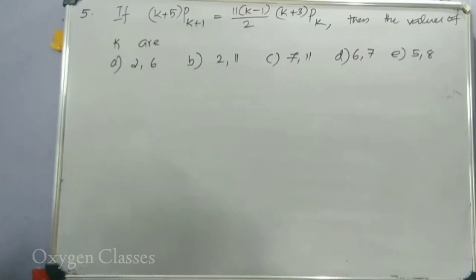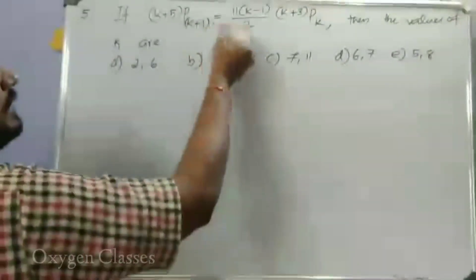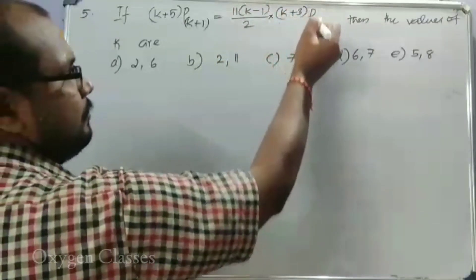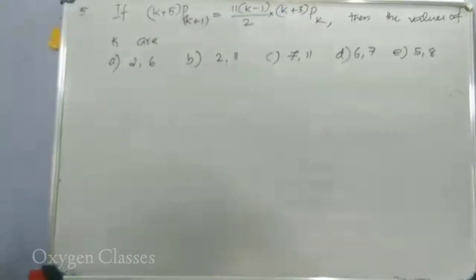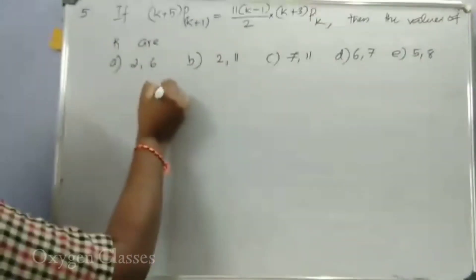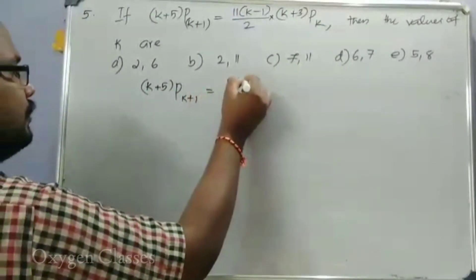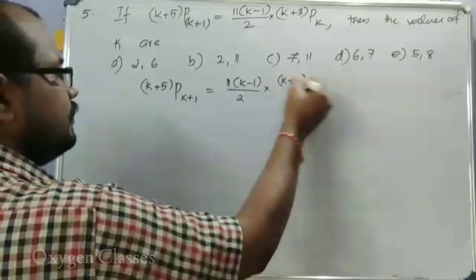If k+5·P(k+1) is equal to 11 into (k-1) by 2 into (k+3)·P(k), then the values of k are. The expression is equal to k minus 1 by 2 into k plus 3, P(k).